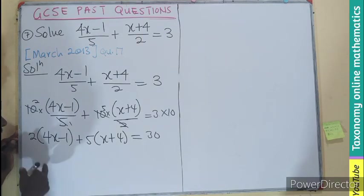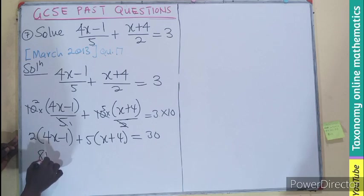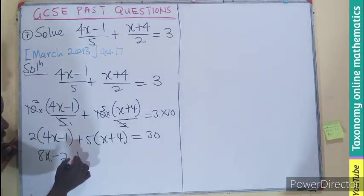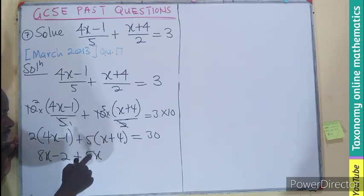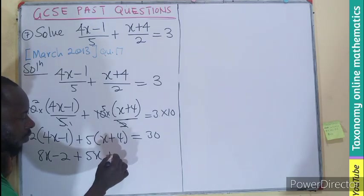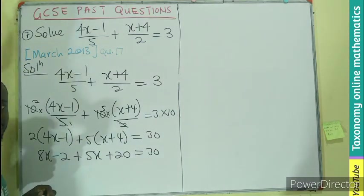We have to expand the brackets by using the term outside to multiply each term. 2 times 4x gives 8x. 2 times minus 1 is minus 2. 5 times x is 5x. 5 times 4 is 20 equals 30.